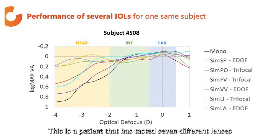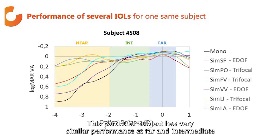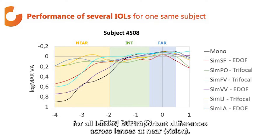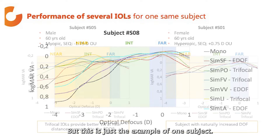This is a patient that has tested seven different lenses and we can see their performance at all distances. This particular subject has very similar performance at far and intermediate for all lenses, but important differences across lenses are seen at near. But this is just the example of one subject.